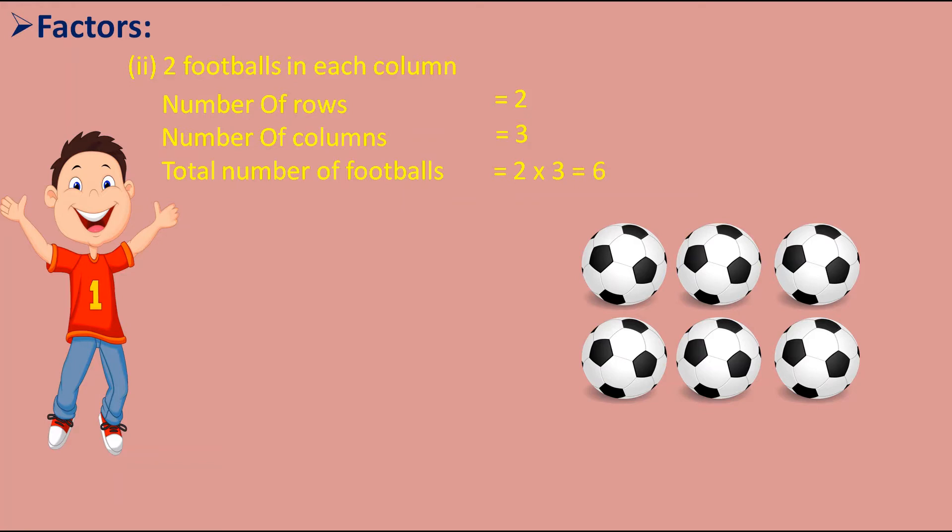Now he tried to put four footballs in each row — one, two, three, four, five, six — but the fifth and sixth footballs came in the next row with two empty spaces. So he can't arrange four footballs in each row.